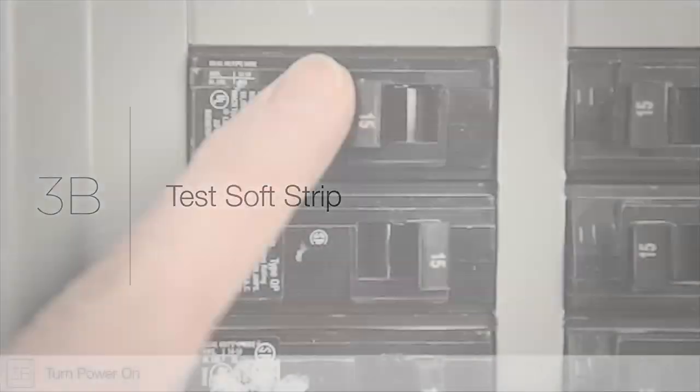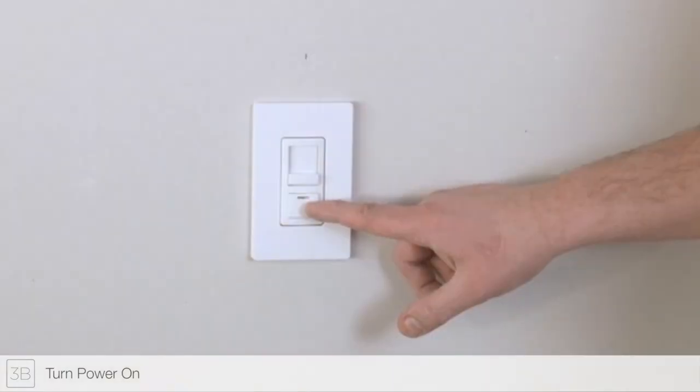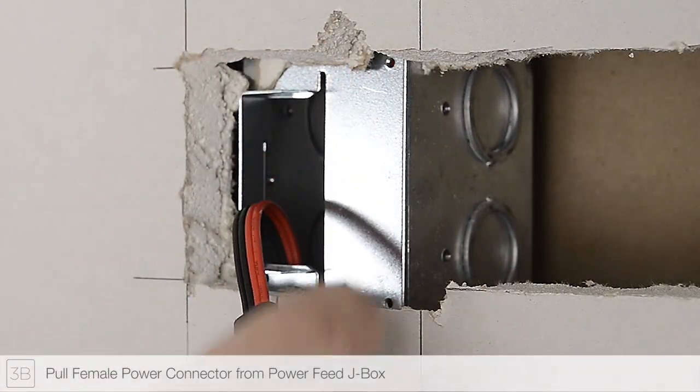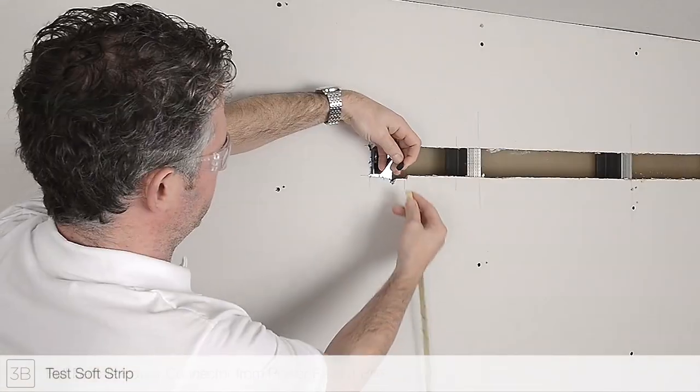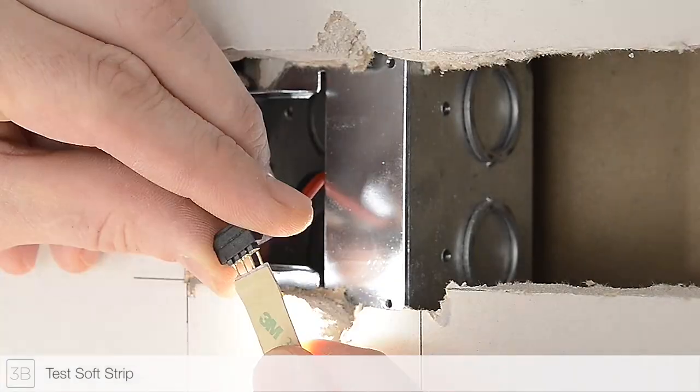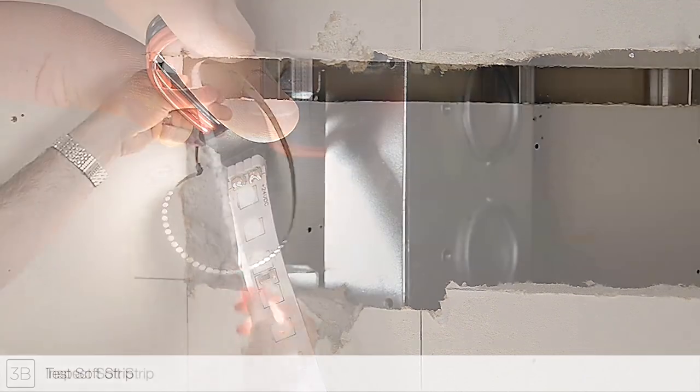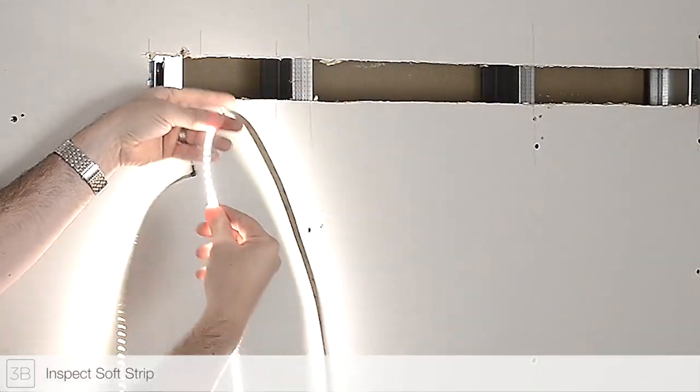Step 3B: Restore power to the junction box to test the LED soft strip. It is important to align the plus 24VDC marking on the soft strip with the red wires of the power feed cable. Inspect the strip for any irregularities before continuing.